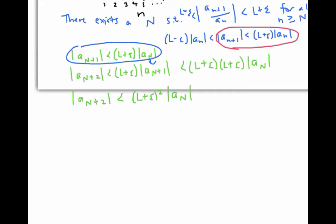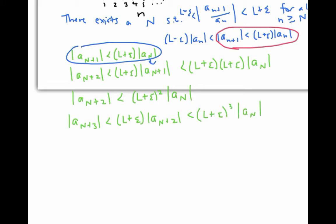Let's try this one more time. Going back to my original inequality and plugging in capital N plus two for lowercase n, then stringing these two inequalities together, I get that this is less than (L plus epsilon) cubed times the absolute value of a sub capital N. And in general, the same reasoning shows that the absolute value of a sub (capital N plus i) is less than (L plus epsilon) to the i times the absolute value of a sub capital N, for any i.